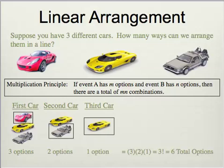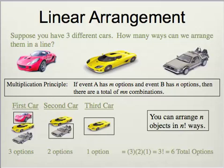This gives you six total options. In general, you can arrange n objects in n factorial ways. That's always the case for a linear arrangement — you have n objects, and one option goes down every single time. You always multiply by one value less all the way until you get down to only one option left, which is exactly what your factorial is.